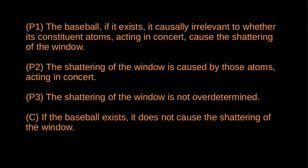Here is the argument more formally. The baseball, if it exists, is causally irrelevant to whether its constituent atoms acting in concert cause the shattering of the window. The shattering is caused by those atoms acting in concert. The shattering is not overdetermined. So the baseball, if it exists, does not cause the shattering of the window. An event is overdetermined if it has at least two distinct causes each of which would be sufficient on its own to bring about the event. Events will have more than one cause — an explosion may be caused by a spark plus the presence of flammable gases — but in these cases the different causes are jointly necessary.